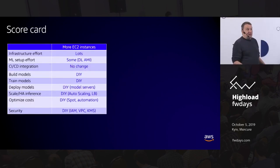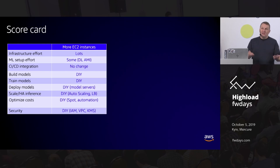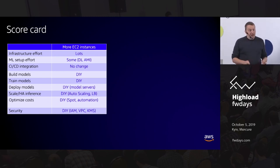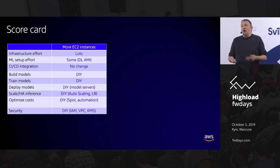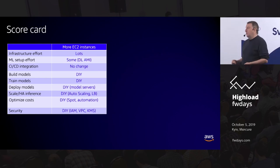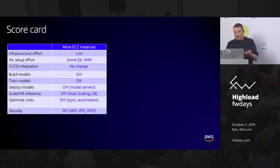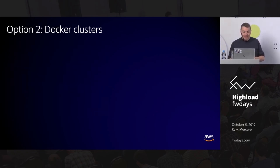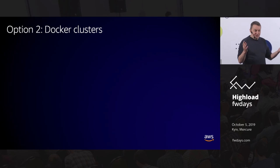If you go the EC2 route, infrastructure effort is significant — you're dealing with instances, subnets, VPCs, SSH keys. ML setup is not that painful if you use the Deep Learning AMI. CI/CD works the same if you know how to deploy to EC2. Building, training, deploying, scaling, optimizing, and securing is all your responsibility using EC2 features. You have everything you need, but it's a bit unnecessary if you ask me — unless you love IAM, VPC, and KMS.